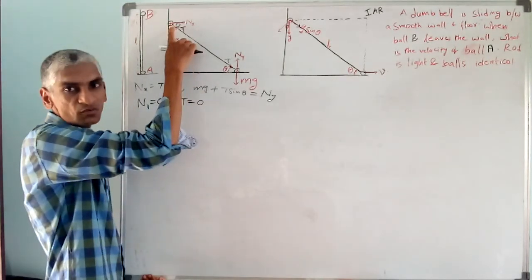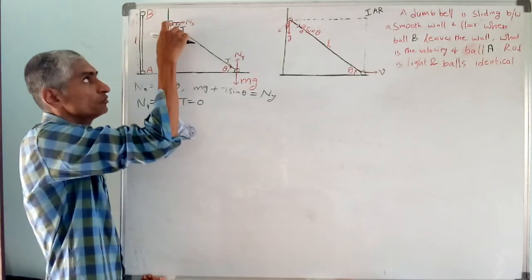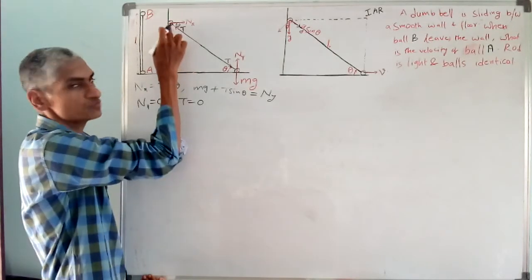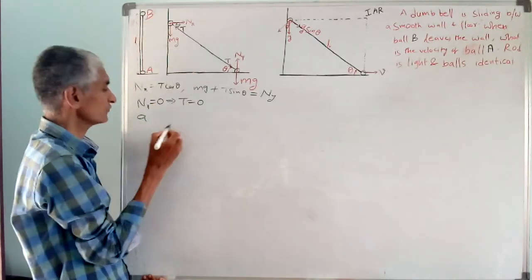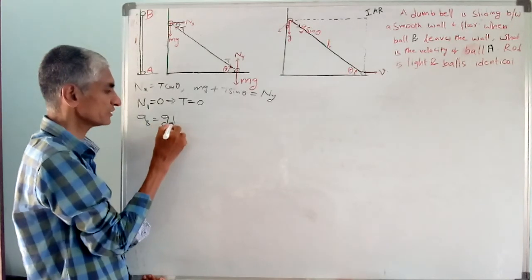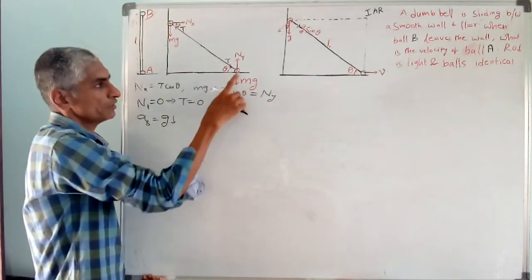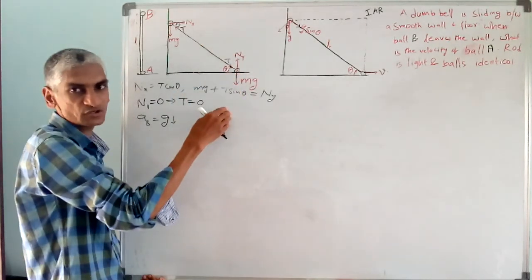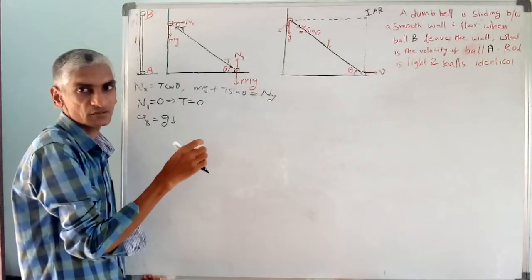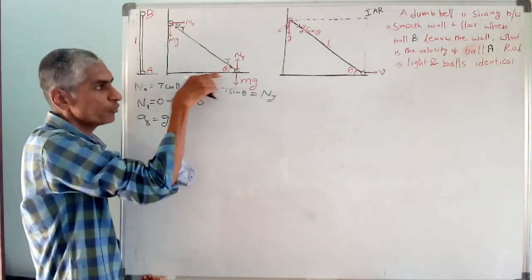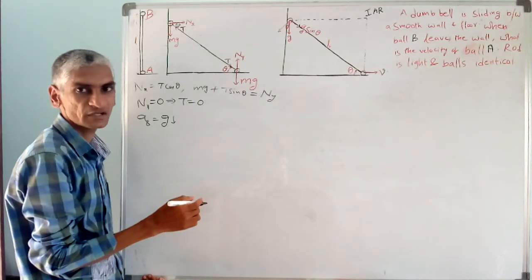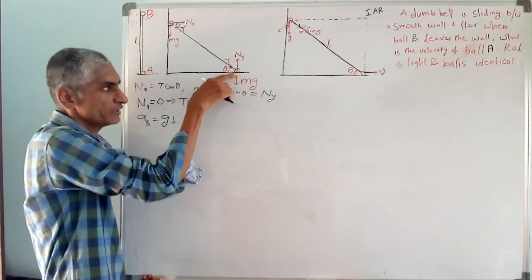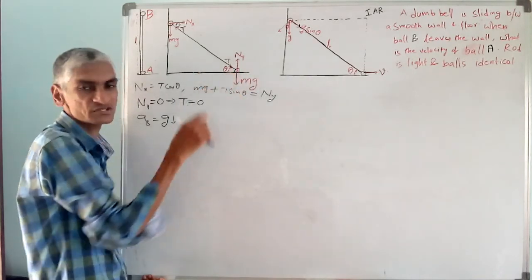When T equals zero, what is the acceleration of ball A? The only force acting on it is its own weight Mg, so acceleration of ball A is zero in the horizontal direction. Acceleration of B is G in the downward direction. For ball B moving horizontally, net force in the vertical direction is always zero. In the horizontal direction, the only force is T cos theta, and since tension is zero, net force on ball B is also zero, so its acceleration is zero.